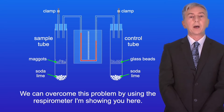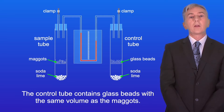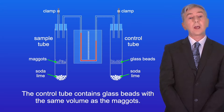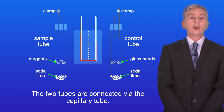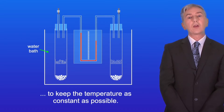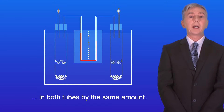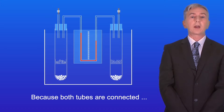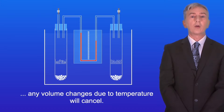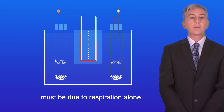We can overcome this problem by using the respirometer I'm showing you here. In this case the sample tube containing our maggots is connected to a control tube. The control tube contains glass beads with the same volume as the maggots. The two tubes are connected via the capillary tube, and both tubes are placed in the same water bath to keep the temperature as constant as possible. Now if the temperature does change, this will affect the volume of air in both tubes by the same amount, and because both tubes are connected any volume changes due to temperature will cancel. So any movement of the coloured liquid must be due to respiration alone.